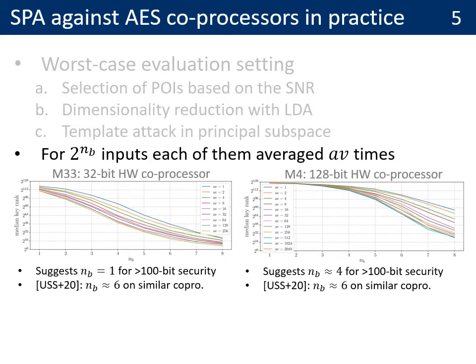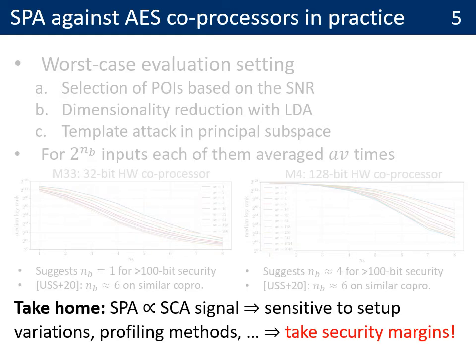For the 32-bit hardware coprocessor, we really have to stick with NB equals 1 if we want to maintain a 100-bit security level. By contrast, for the 128-bit hardware coprocessor, we can tolerate a slightly larger NB of maybe 4. We get slightly different results than the Retrofitting paper, which suggested slightly larger NB values. The take-home message is that SPA security is quite difficult to evaluate because it mostly depends on the side-channel attack signal — unlike masking, where security depends on the signal-to-noise ratio, which is easier to evaluate. In particular, the signal can be very sensitive to setup variations. So we should take security margins when using this type of construction.